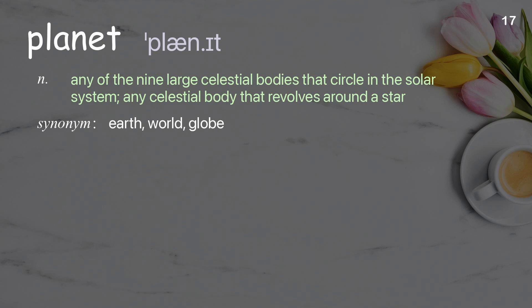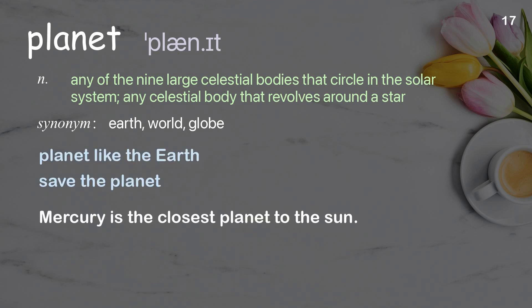Planet: any of the nine large celestial bodies that circle in the solar system; any celestial body that revolves around a star. Examples: planet like the Earth; save the planet. Mercury is the closest planet to the sun.